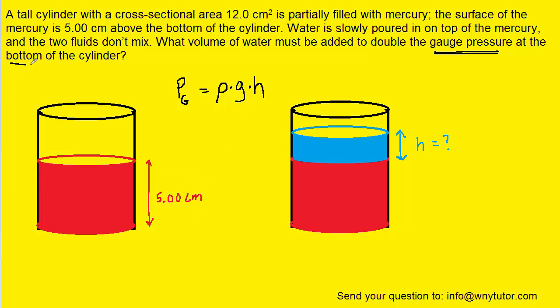Our focus will be on the bottom of the cylinder. If we wanted to determine the gauge pressure here, we could say that equals the density of mercury, ρ_Hg, multiplied by g, and then multiplied by the depth of the mercury, which is 5 centimeters.